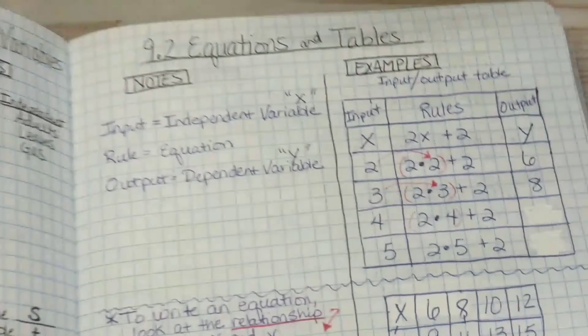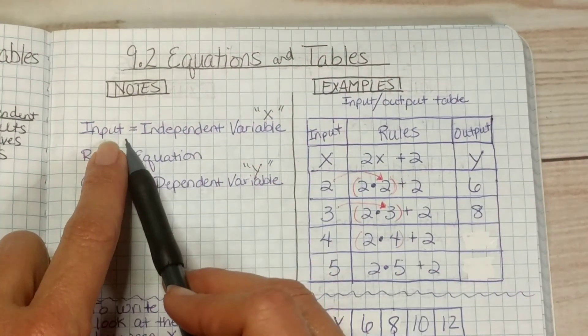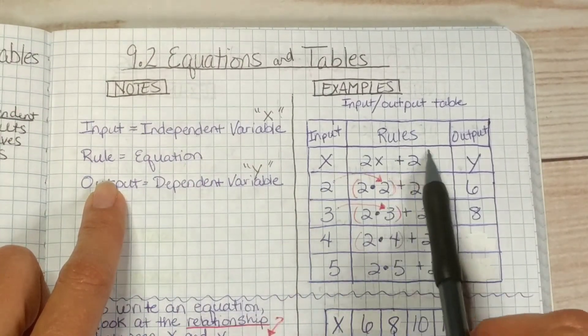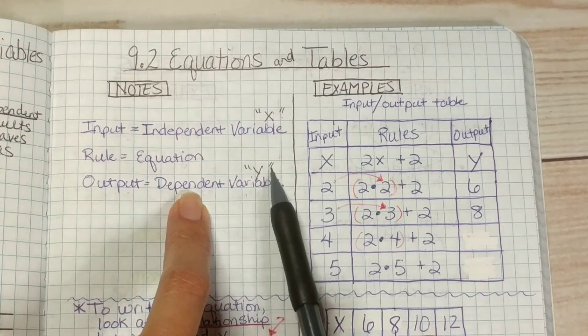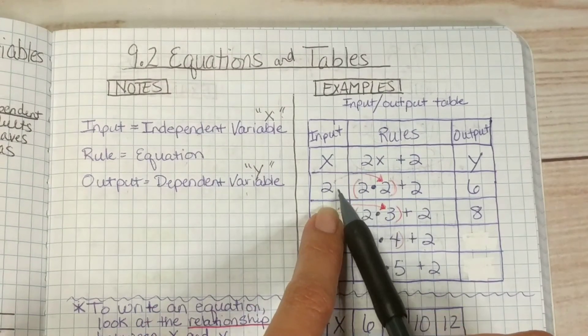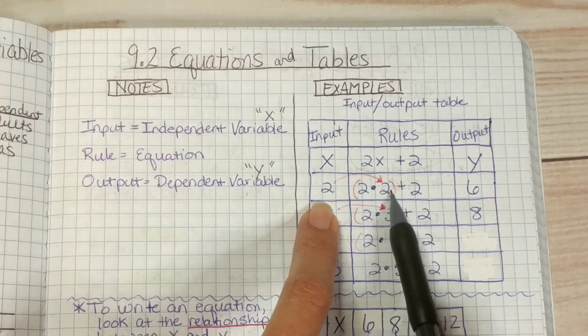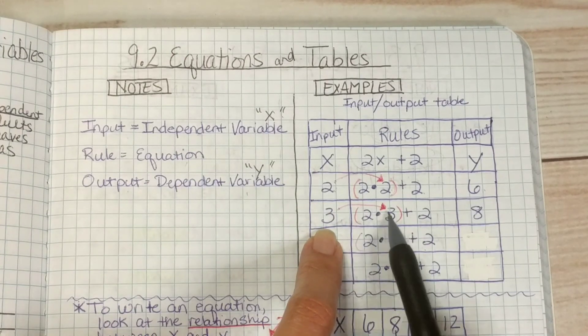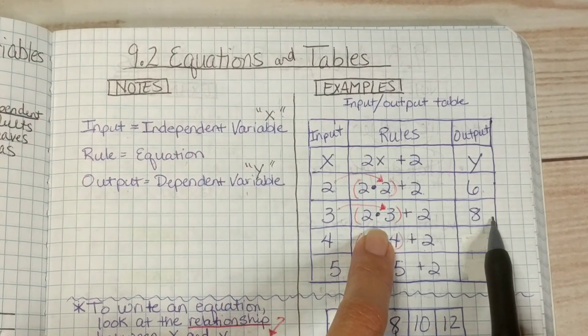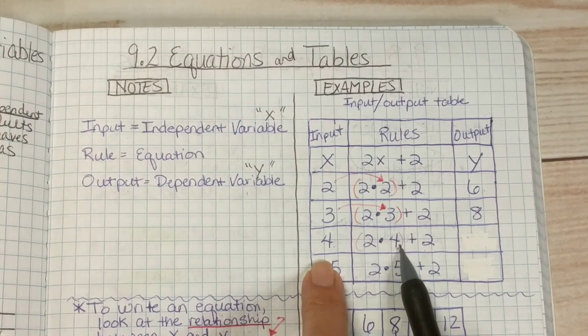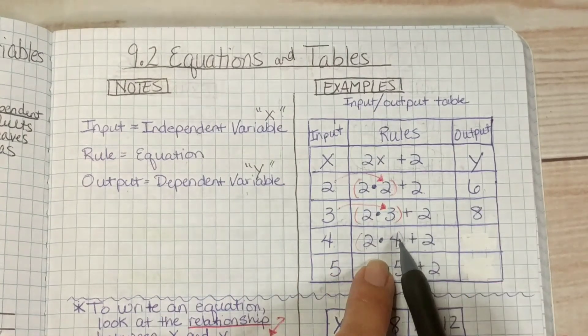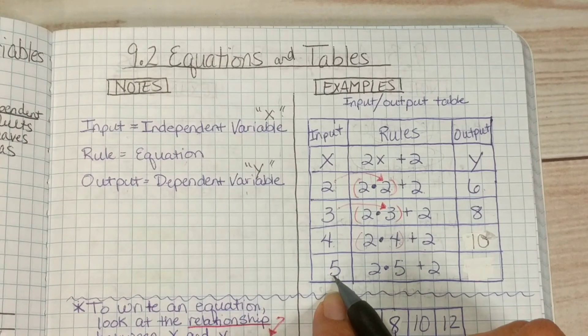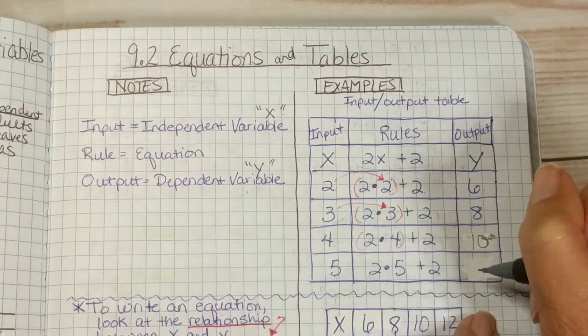Okay. Let's take a look at our notes real quickly here. All right. So, the input is our independent variable or the X in our table. The rule is the equation. The output is the dependent variable or the Y value. So, in this case, when we take 2 and substitute it in for the X, 2 times 2 plus 2 more gives us 6. When we substitute 4 in for X, 2 times 3 is 6 plus 2 more gives us 8. Then, when we substitute 5 in for X, 2 times 5 is 10 plus 2 more is 12.